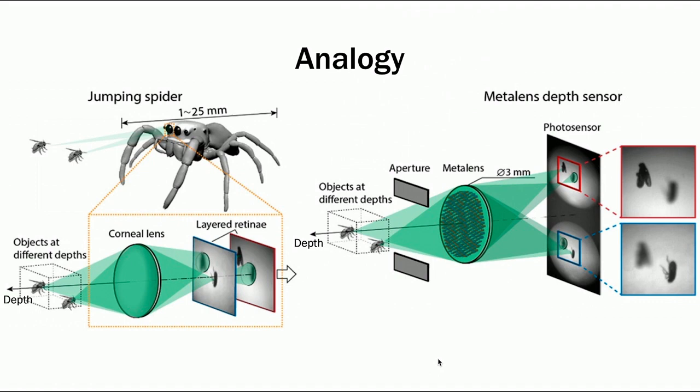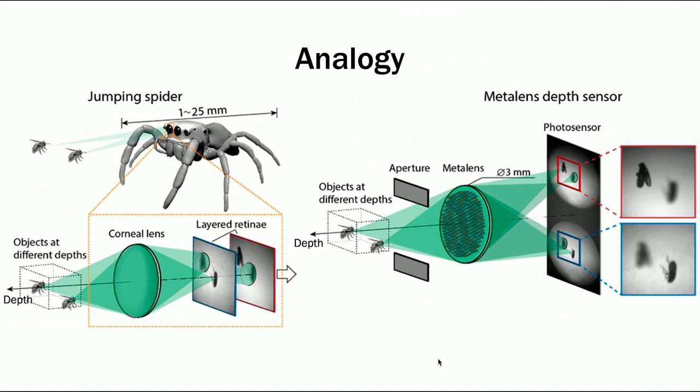If we compare our design with eyes of jumping spiders, both designs generate images with different defocus simultaneously. Currently, our design has a restriction of field of view to avoid overlapping of the two images, but this can be solved by using a polarization-sensitive MetaLens so that the two images are in different polarization, which can be captured separately using a polarization camera.